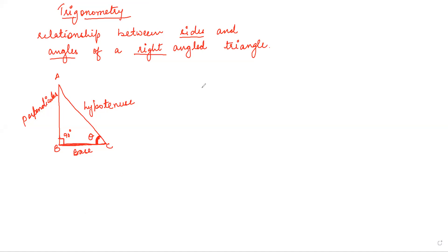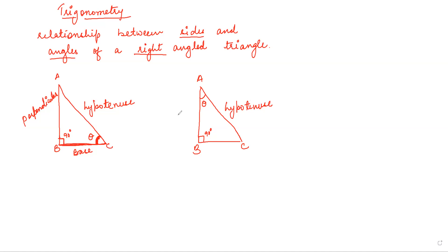Now try to understand one more thing. If I take the same right-angle triangle, this one is your 90-degree angle, and I take my theta at a different corner — the hypotenuse will remain the same, as the longest side of the triangle. But this side will now be called base because it is making the angle theta, and the side which is opposite will be called perpendicular this time. So you have to first see where the angle theta is.